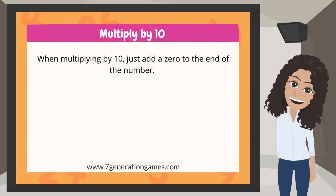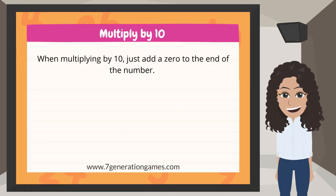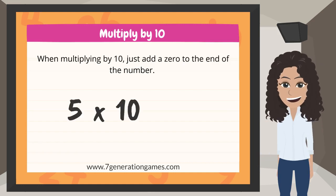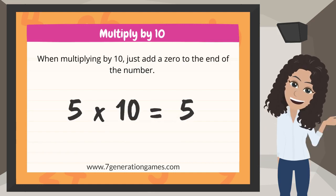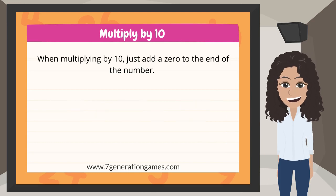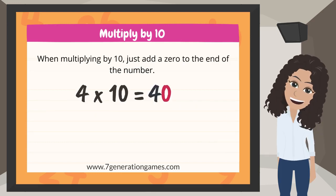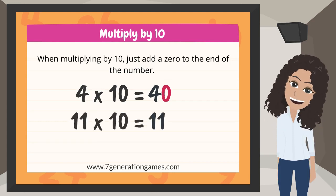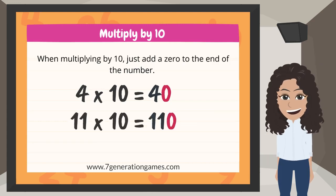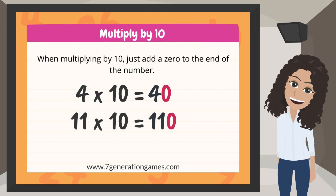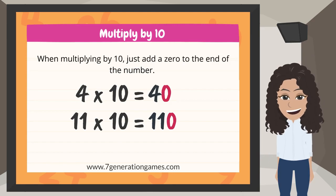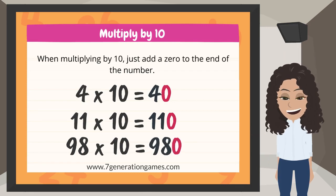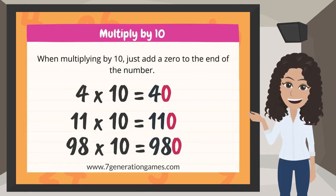Multiply by 10: when multiplying by 10, just add a 0 to the end of the number. 5 times 10 is 5 with a 0 at the end, which becomes 50. 4 times 10 equals 40. 11 times 10 is 11 with a 0 at the end, which equals 110. 98 times 10 is 98 with a 0 at the end, which equals 980.